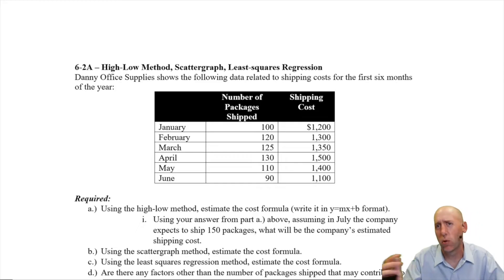Now, remember we're worried about lines here and the cost formula is y equals mx plus b. The activity here is the packages shipped. That's going to be our x. And our shipping cost is our y. Costs are always on the y-axis.